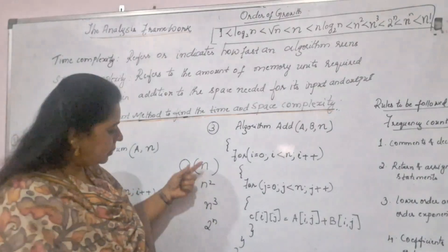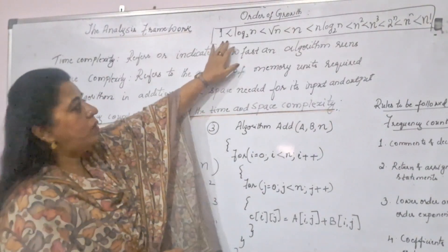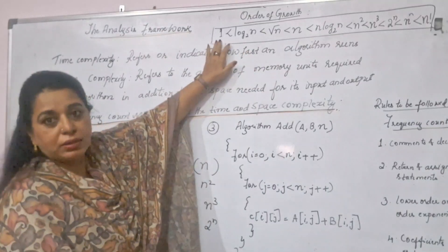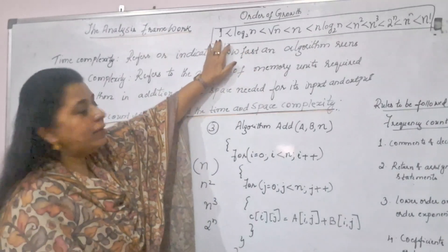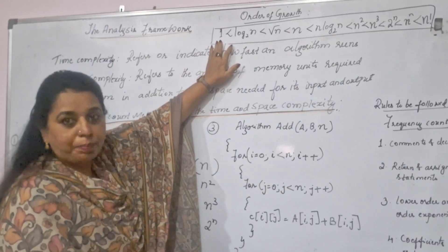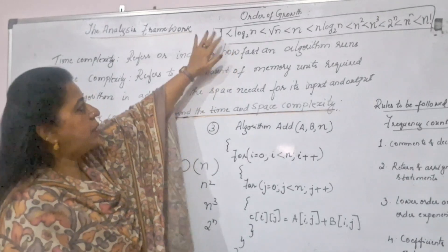Now, to compare this growth, we have this particular relation. So, we call this as the order of growth. The order of growth starts in this manner. So, one is there which takes minimum amount of time for an algorithm to complete its job, to get executed.